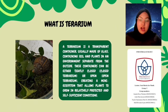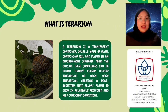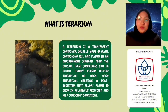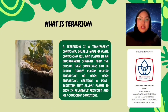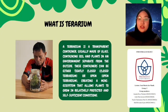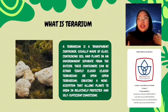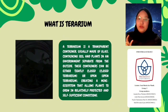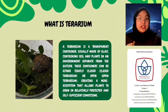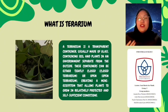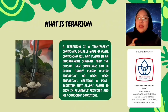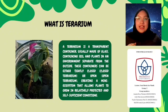A terrarium is a clear container, usually made of glass, where plants are grown in a small ecosystem. It can be either closed or open, creating a humid or dry environment for different kinds of plants. A terrarium is more than just a glass container filled with plants — it's like creating your very own miniature world of nature, right on your table. Imagine a tiny rainforest or desert behind a layer of clear glass, where each plant, every grain of soil, and even the droplets of water play a crucial role in sustaining life inside.